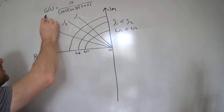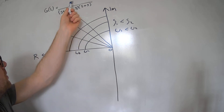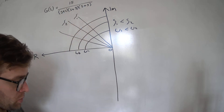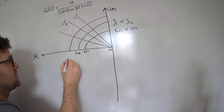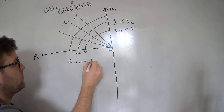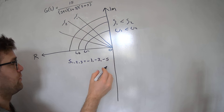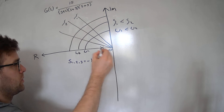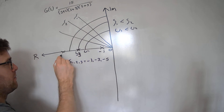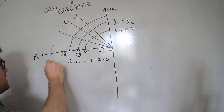In this video we have the following open loop transfer function. You'll notice it has no zeros and three poles. The poles are located at the roots: three poles located at minus one, minus three, and minus five.